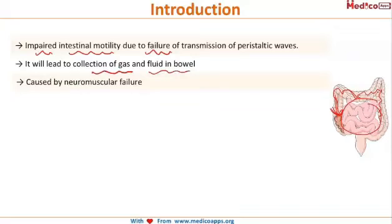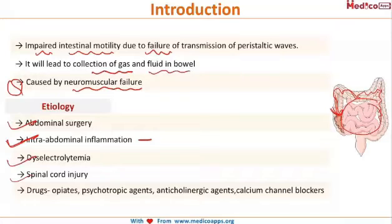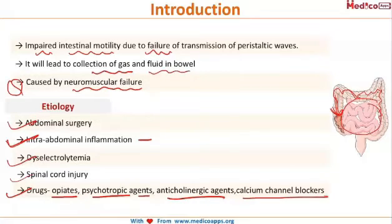This is mainly caused by neuromuscular failure. The causes of neuromuscular failure can be due to abdominal surgeries, intra-abdominal inflammation which may include abscess, sepsis-like conditions, dyselectrolitemia, spinal cord injuries, and drugs like opioids, psychotropic agents, anticholinergic agents, and calcium channel blockers.